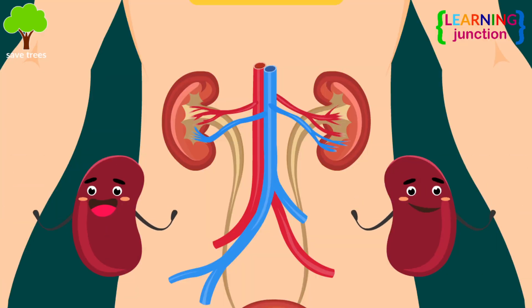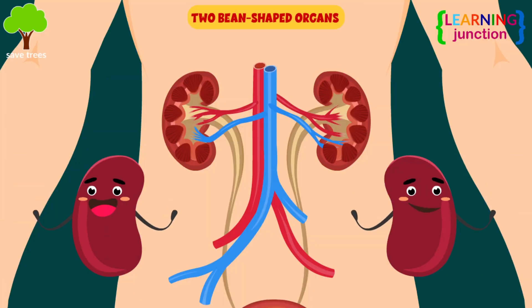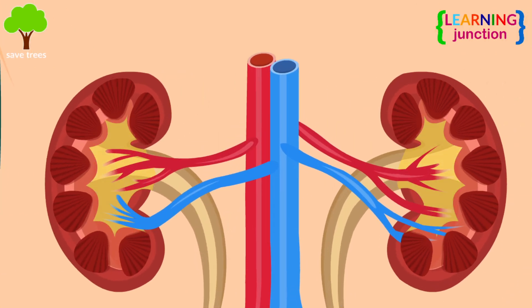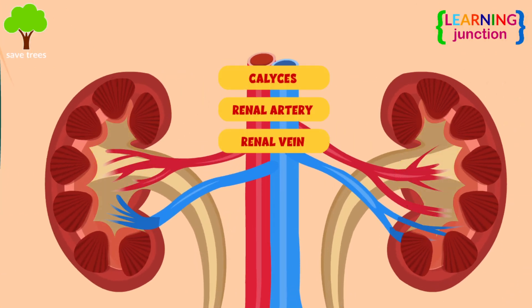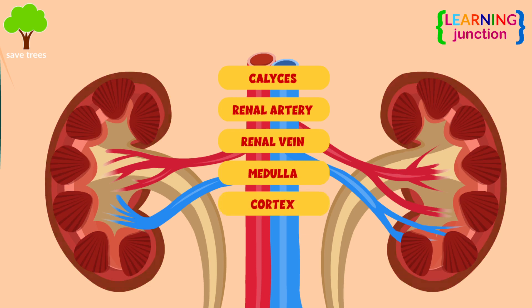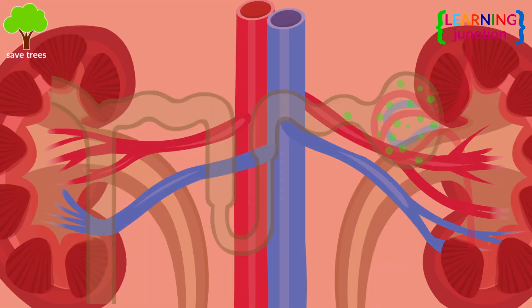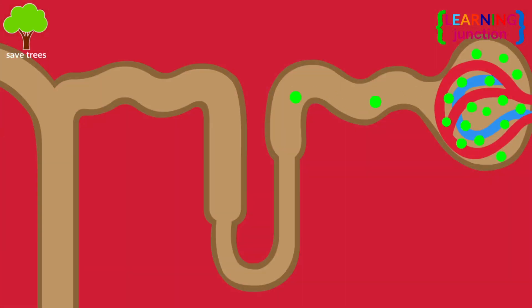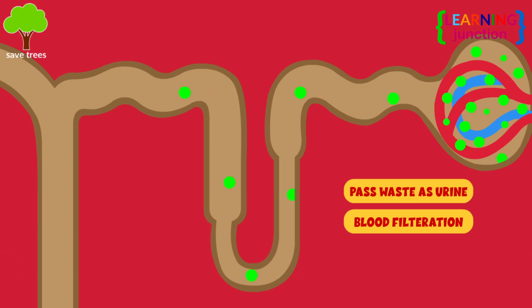The kidneys are two bean-shaped organs which consist of calyces, renal artery, renal vein, medulla, and cortex. They help the body to pass waste as urine, and they also help in blood filtration before sending it back to the heart.